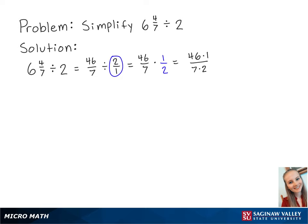Since we have a 2 in the denominator, and 2 is also a factor of 46, we can make this easier by factoring a 2 from the 46. So in the numerator, since 46 times 1 is just 46, we will have 2 times 23 over 7 times 2.